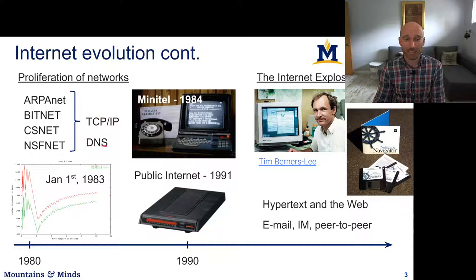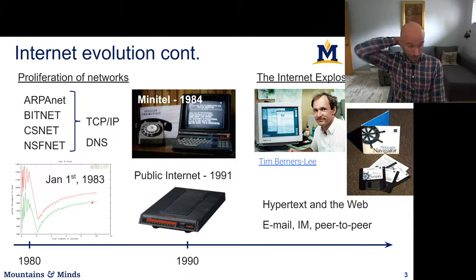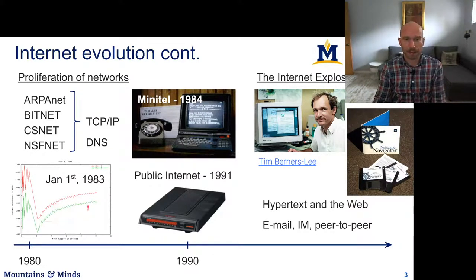People also developed the Domain Name Service, which allowed a mapping between IP addresses and names for different systems. January 1st, 1983 was the flag day when we switched to TCP. Here's an illustration of two TCP flows, with throughput on the y-axis and time on the x-axis, coordinating their transmission rate. Initially they're over-transmitting, then they back off and slowly figure out the right amount of data to send so they don't overwhelm the network. We'll talk about how this works in detail later in the course.